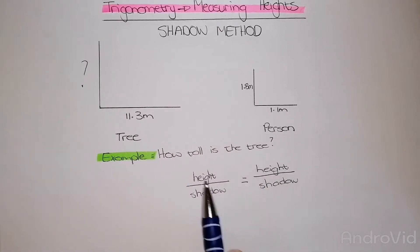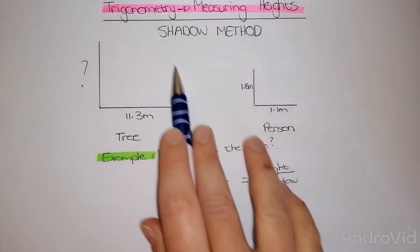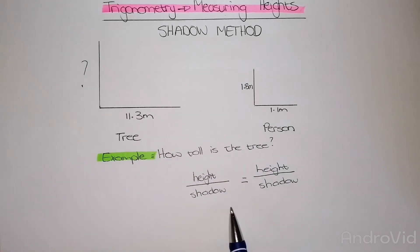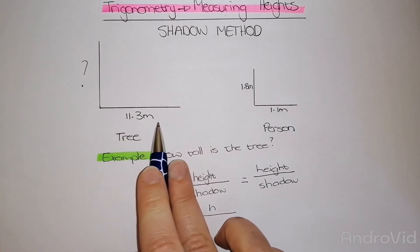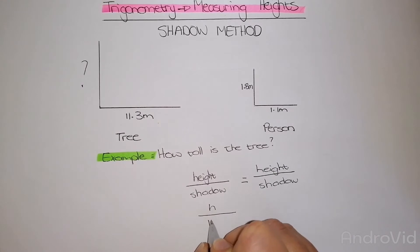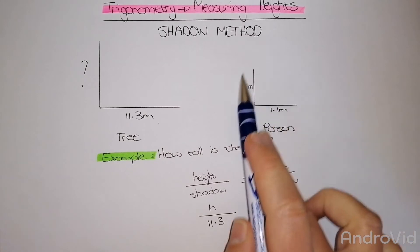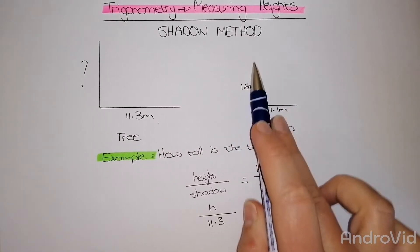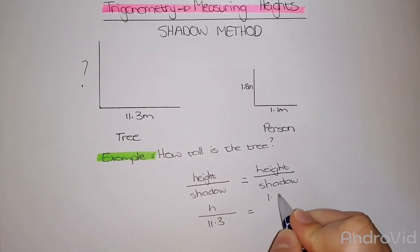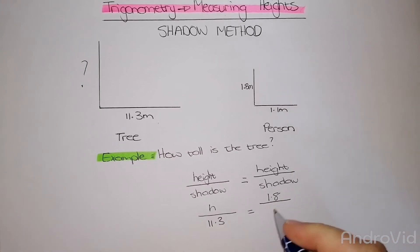What I need to do is make my big object, my tree, my first fraction. Because I'm wanting the height, I'm just going to leave h at the top of my fraction. At the bottom of my fraction, I'm going to put the shadow that that object has cast, which is 11.3.